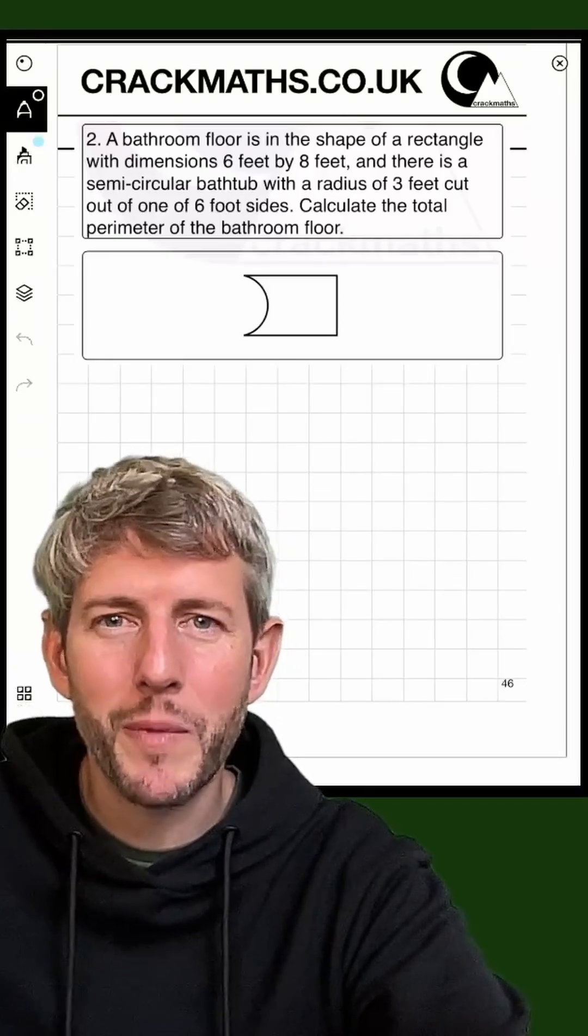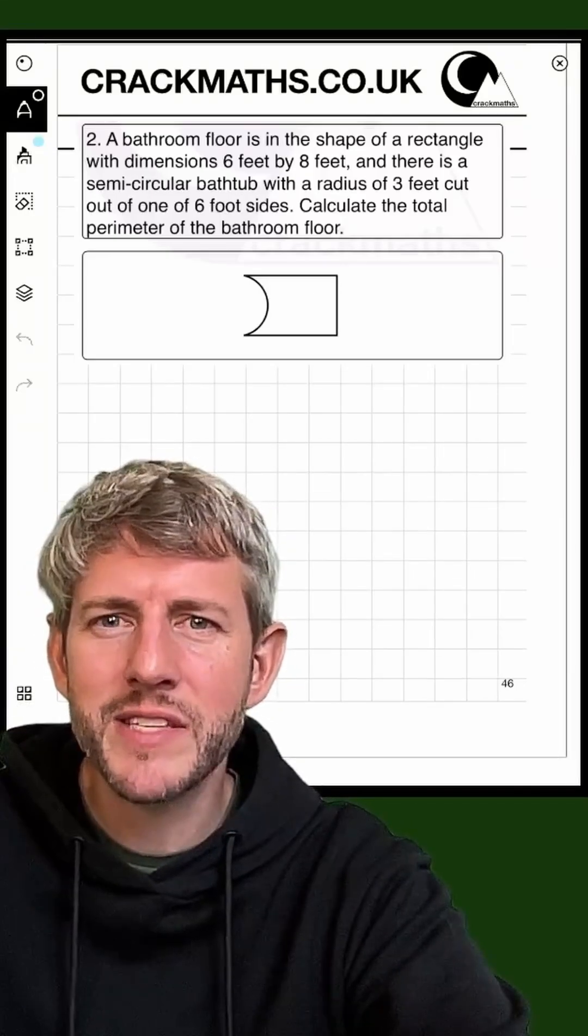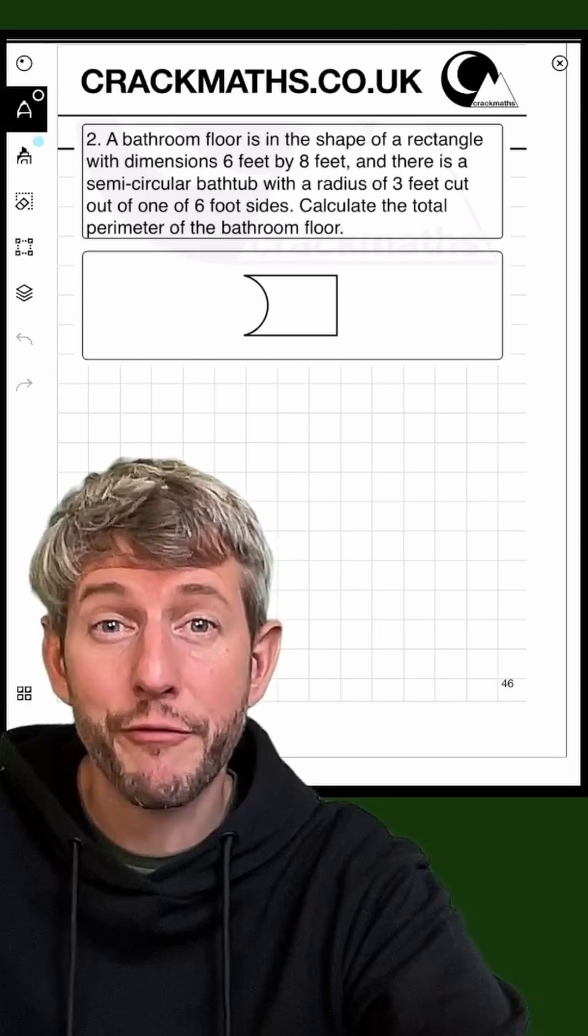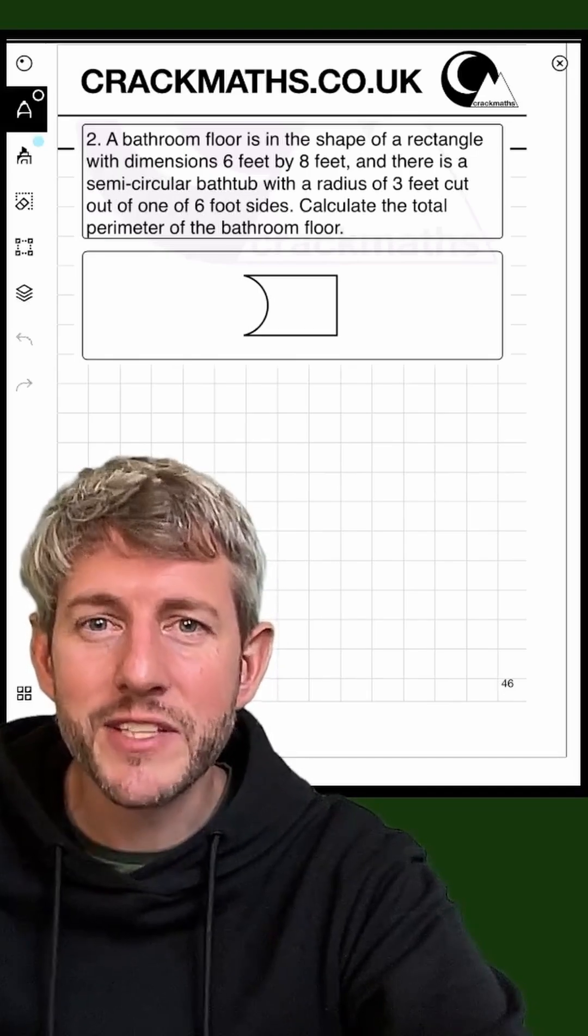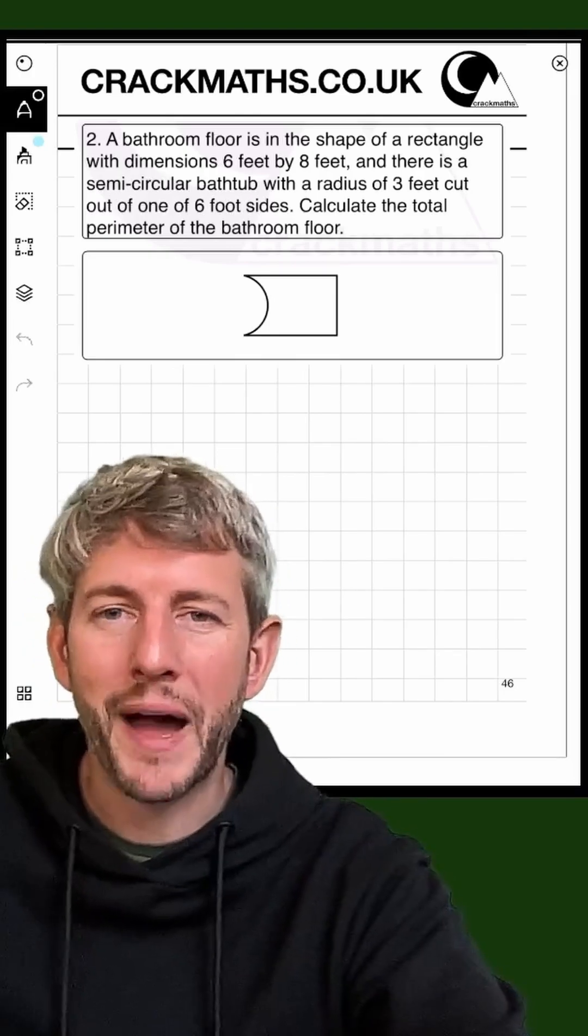A bathroom floor is in the shape of a rectangle with dimensions 6 feet and 8 feet, and there is a semi-circular bathtub with a radius of 3 feet cut out of one of the 6 foot sides. Calculate the total perimeter of the bathroom floor.